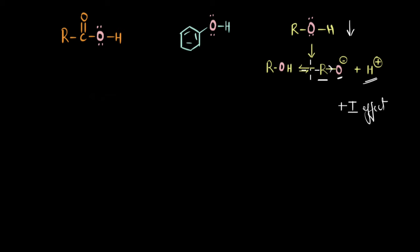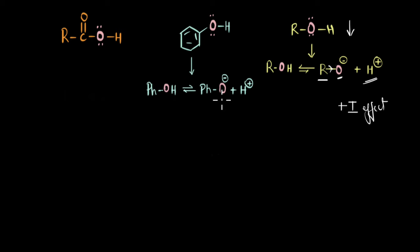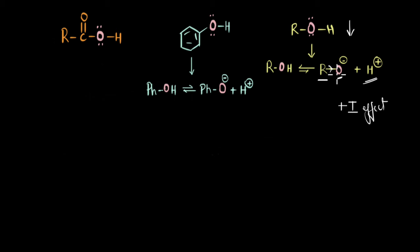Let's now compare this with the conjugate base of phenol. When phenol undergoes dissociation in water, we get the phenoxide ion and H⁺ ions. This phenoxide ion has a negatively charged oxygen atom attached to a benzene ring, and that itself gives us an idea that the phenoxide ion is in a much better state compared to the alkoxide ion.